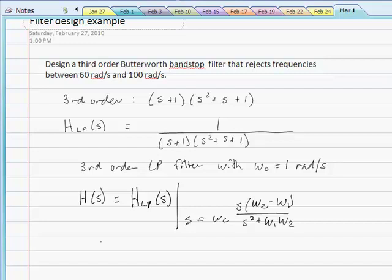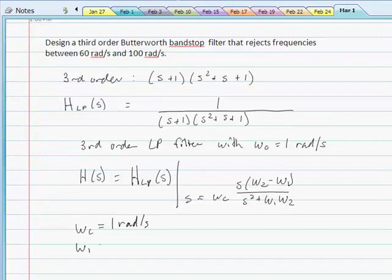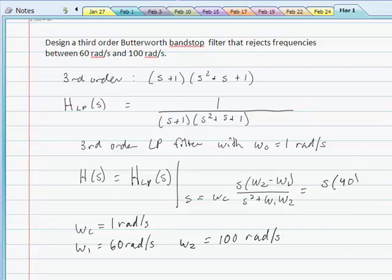And identifying these frequencies: omega c, as we said, was the original frequency of the low-pass filter, which is 1 radian per second. Omega 1 is the lower cutoff frequency, 60 rad/s. And omega 2 is the upper cutoff frequency, which is 100 radians per second. So this is going to be s times 40 over s squared plus 60 times 100, which is 6,000.